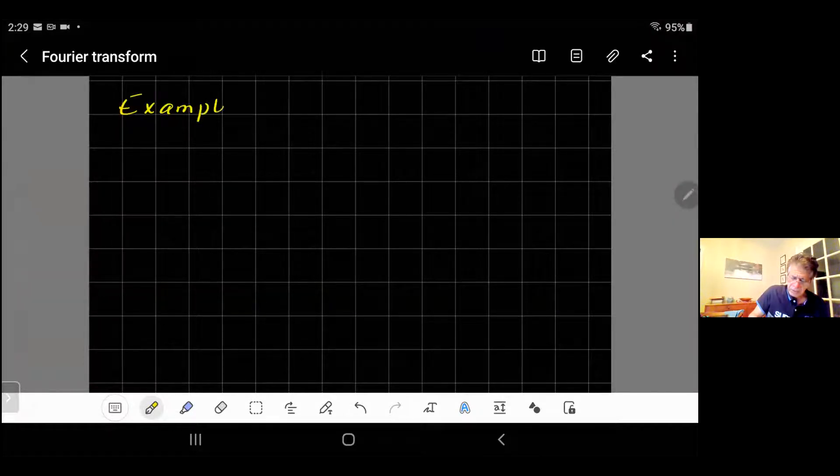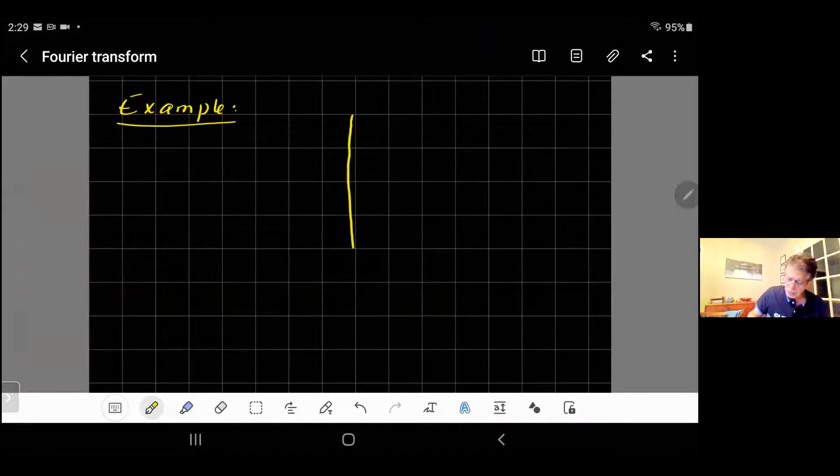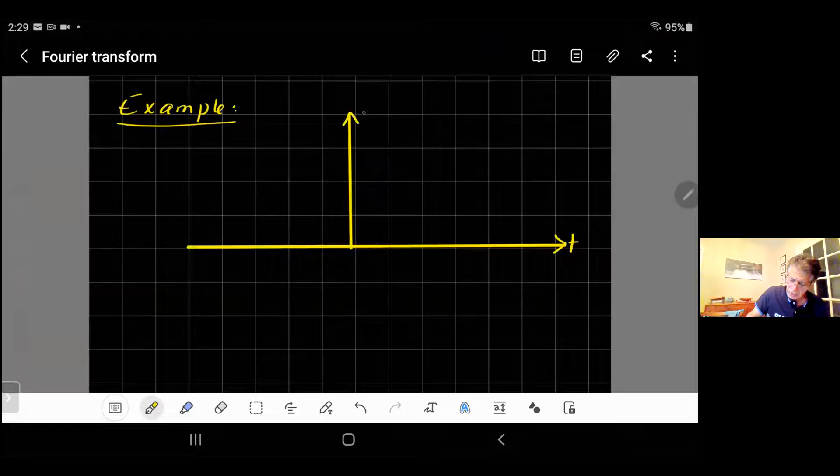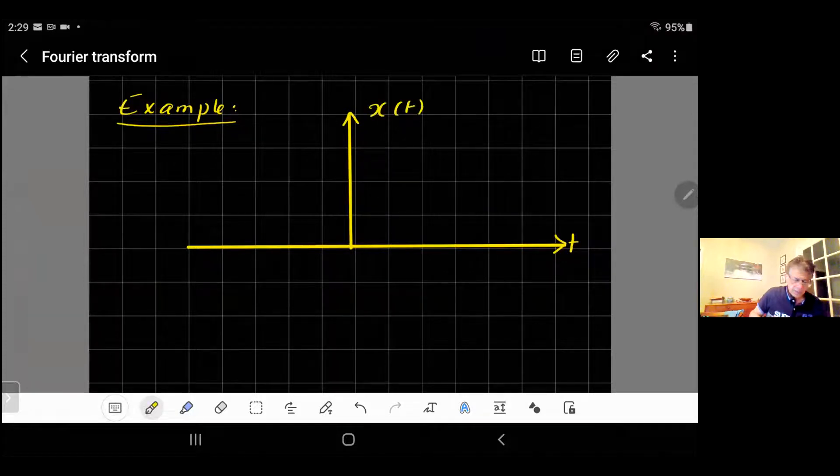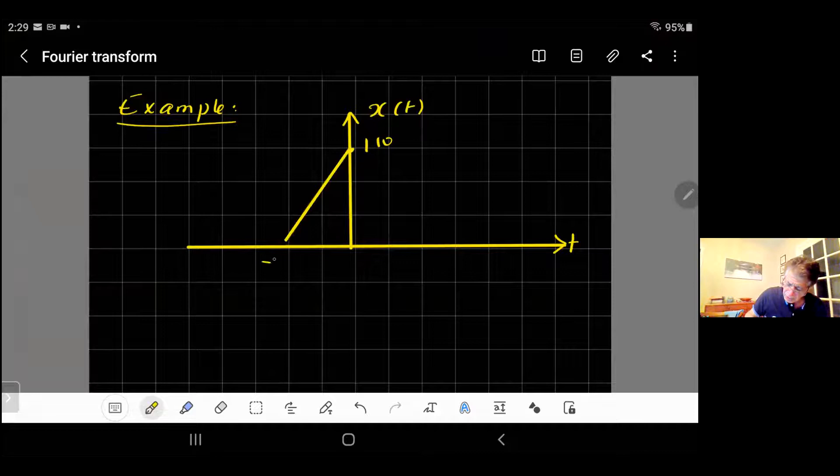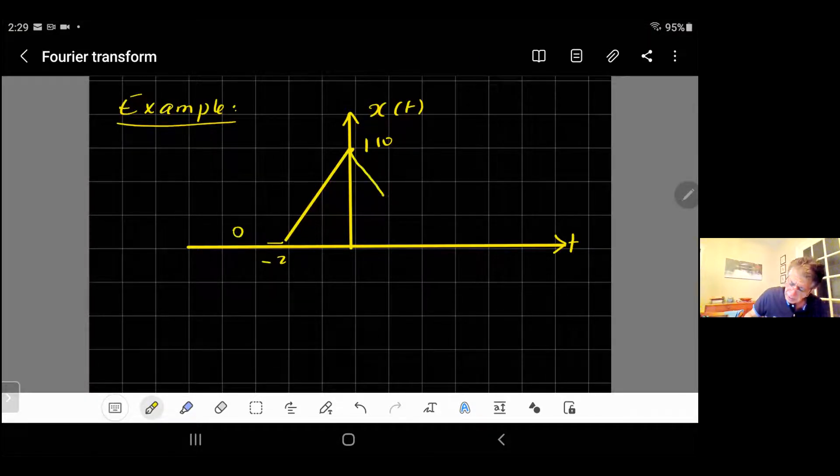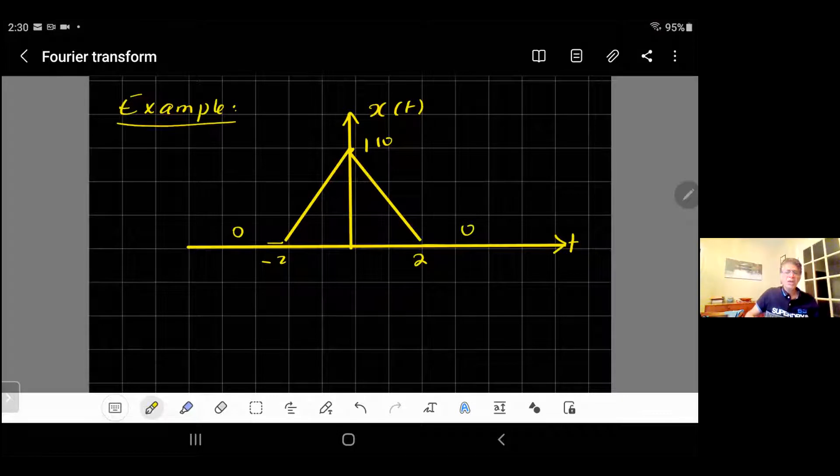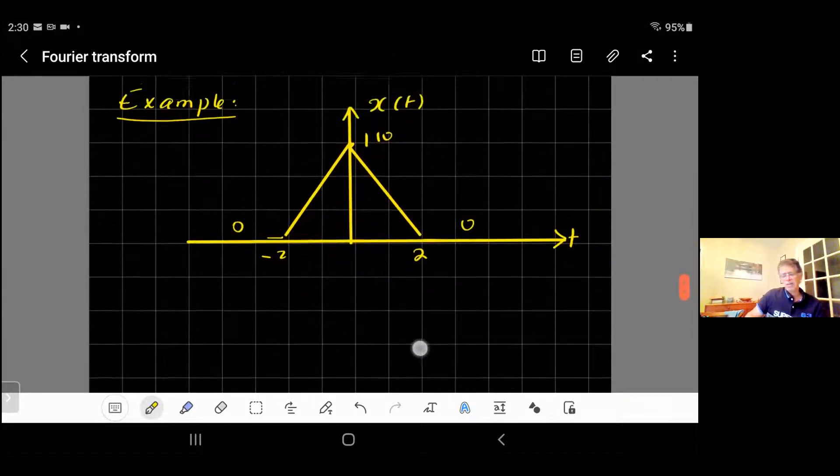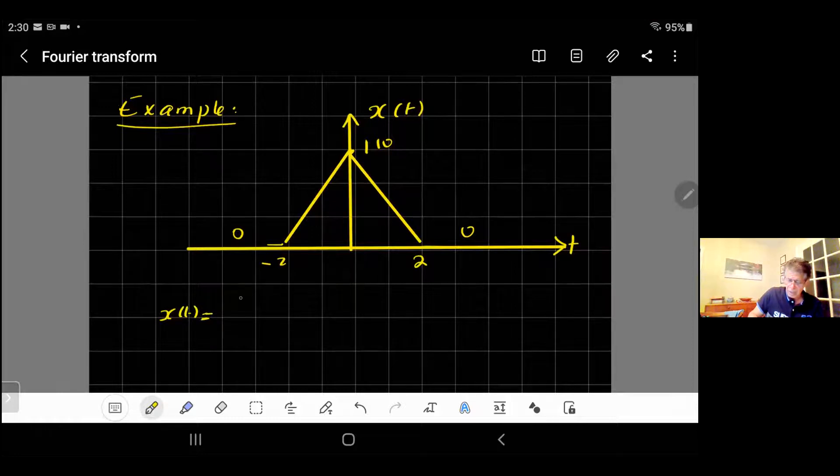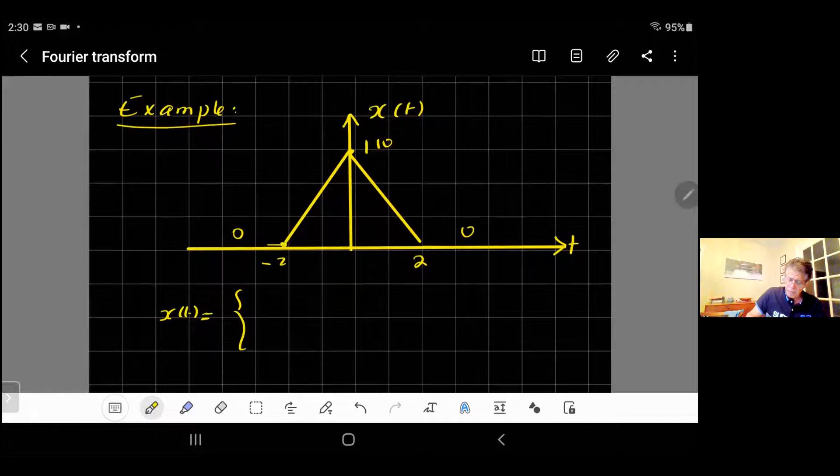Let's assume that the function is given in this way. It has a vertical axis and a time axis. Let's call it x(t). The maximum is equal to 10, and it goes from minus 2 and then it becomes 0, and again at 2 it becomes 0. So it looks like one triangle here in the middle. How can I first try to find the mathematical expression for this one?